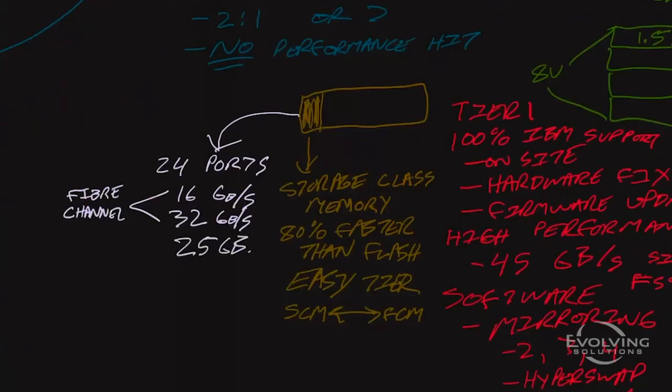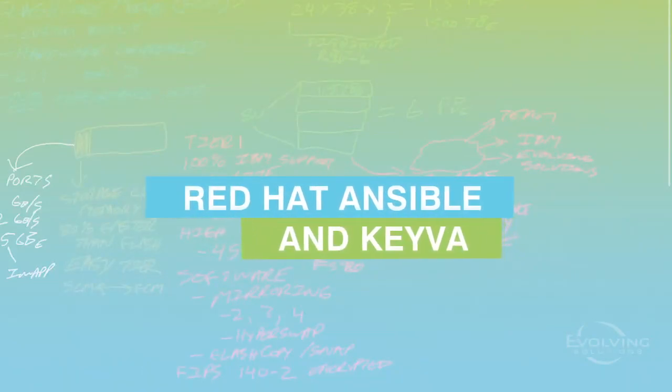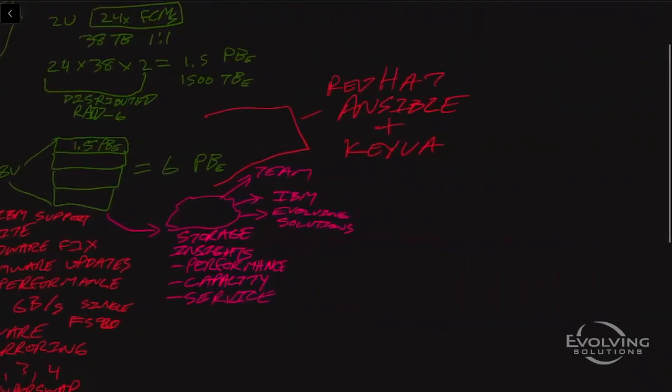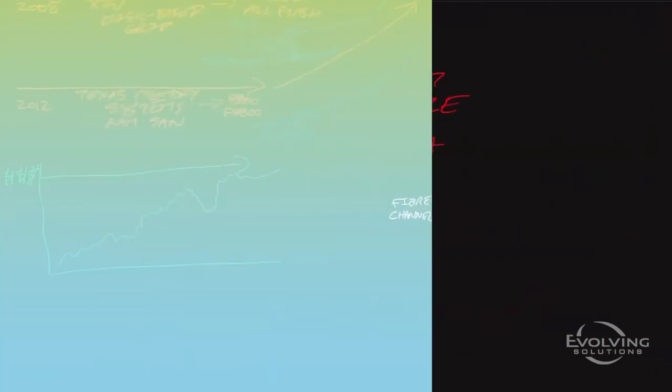Now, we talked about the flash core module. We talked about merging that into the FS9200. We talked about grouping it together into six petabytes of capacity and how important that is from a tiering perspective to manage that from storage insights, how it's a tier one array from a support performance and software functionality perspective. But that's still a massive amount of capacity to consume. So a couple other things that both evolving solutions and IBM are doing to make that easier to consume through our partnership with Red Hat. And we're now a Red Hat Apex partner. We can automate the provisioning of this capacity through Ansible with Kiva, our sister company, and build custom automation to integrate the consumption of that large amount of capacity, plus the provisioning and deployment of it, making it easier to consume, easier to manage with less resources than you have today.